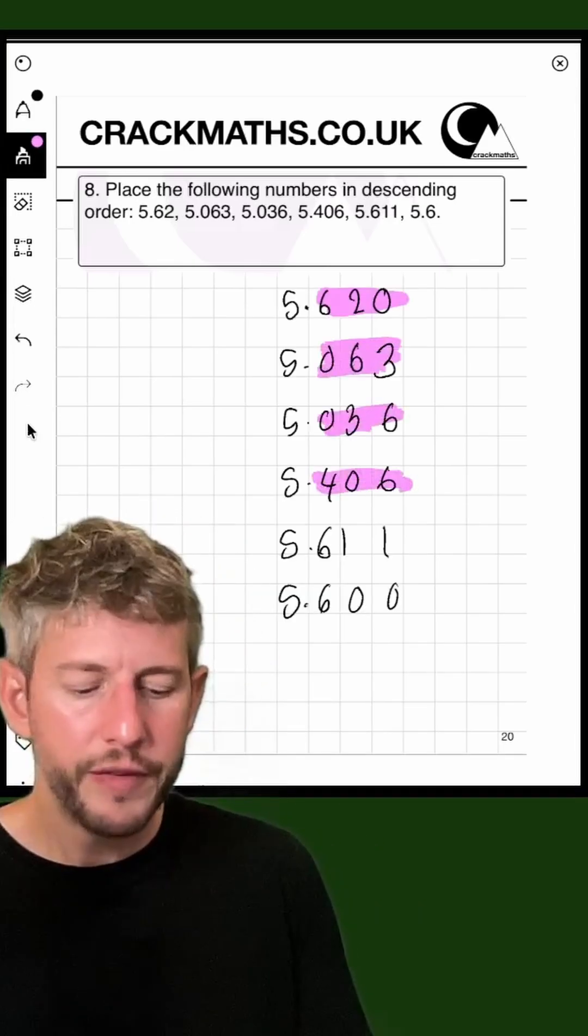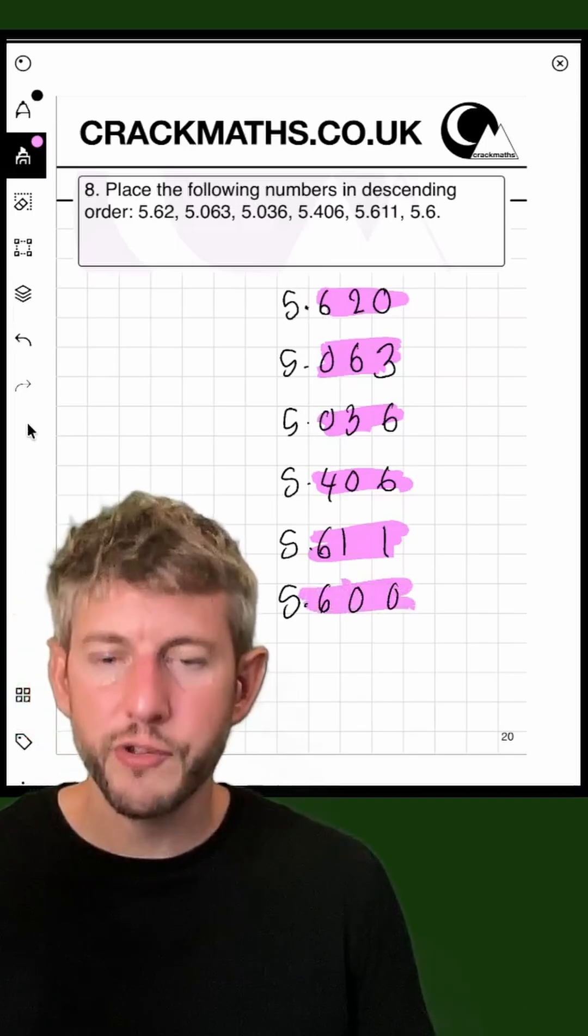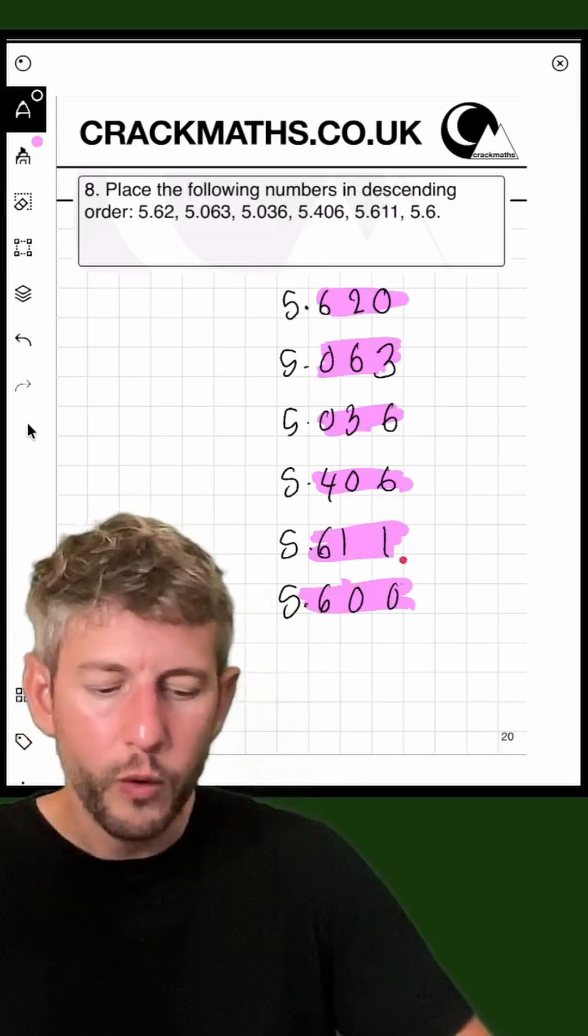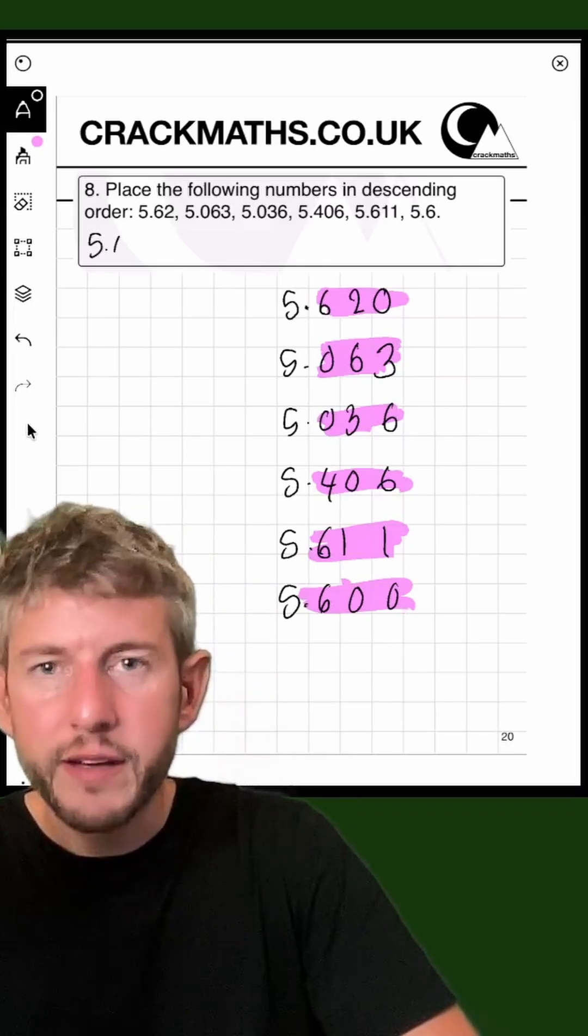Now I can compare these 3-digit numbers here, thinking about them as hundreds. The largest is 5.620, because 620 is larger than all of these other numbers, so 5.62.